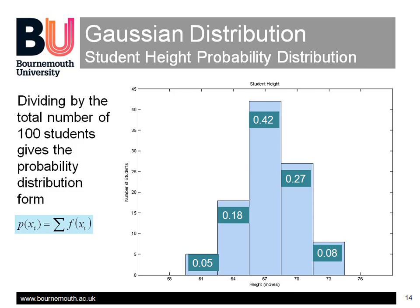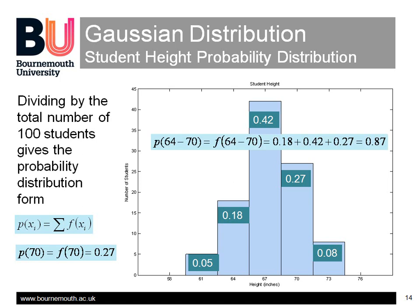So, for example, if 27 of the total 100 are around 70 inches tall, then the probability of any one student from the class being in that height range is P70 equals 0.27. The area under the curve between any two values again represents the probability of a result in that range. So, for example, the probability of a height between 64 and 70 inches is the total area between those values: 0.18 plus 0.42 plus 0.27.